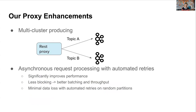The Kafka REST proxy provides all the basic features out of the box. To further improve its performance and scalability, we added our own features like multi-cluster producing and asynchronous request processing. Multi-cluster producing means the same proxy can produce to multiple Kafka clusters — each topic is mapped to a cluster, ensuring we can scale beyond one Kafka cluster. It also enables us to migrate topics from one Kafka cluster to another, which helps balance workload and improve cost efficiency.